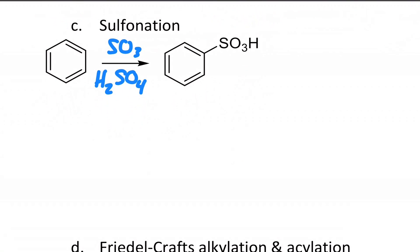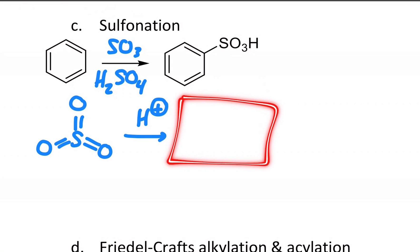I want you to try hitting pause for a second and see if you can figure out the mechanism for how sulfur trioxide first reacts with a strong acid to form some active species. You should be able to figure out what it is based on what gets attached to the ring. And then how does benzene react with that active species to form the substitution product? Hit pause and just try that now in a minute and then come back and watch.